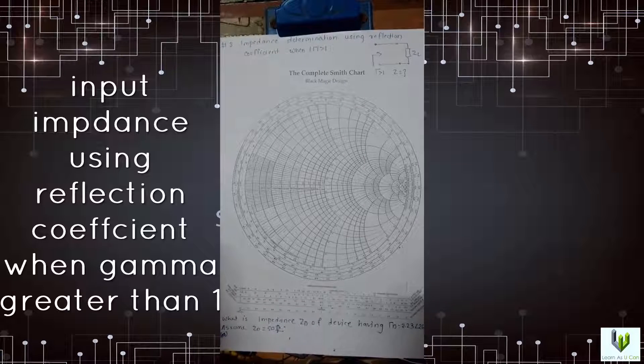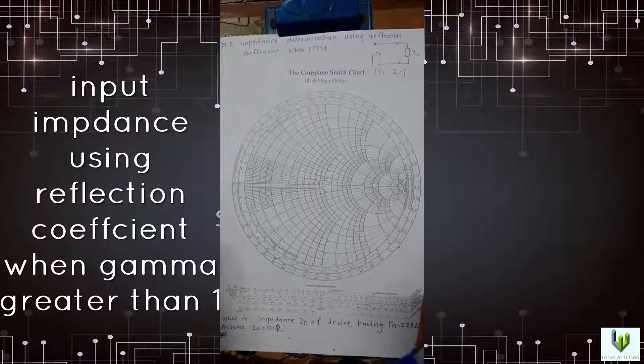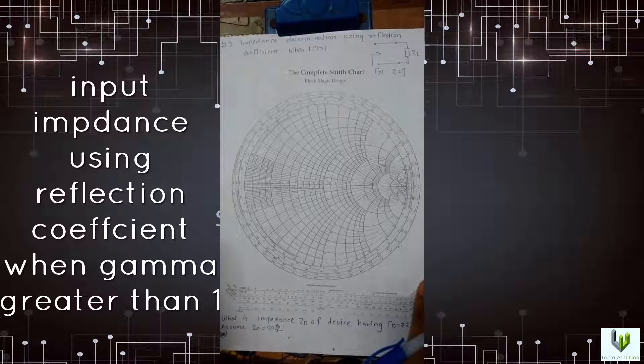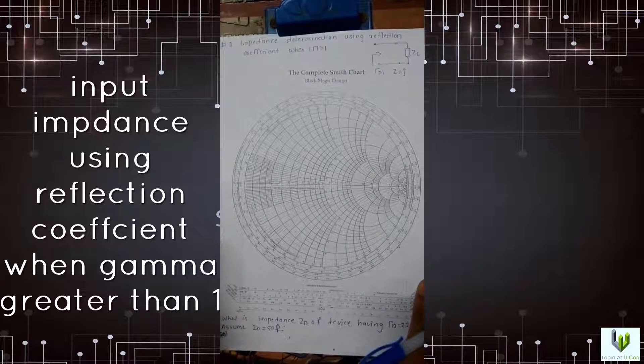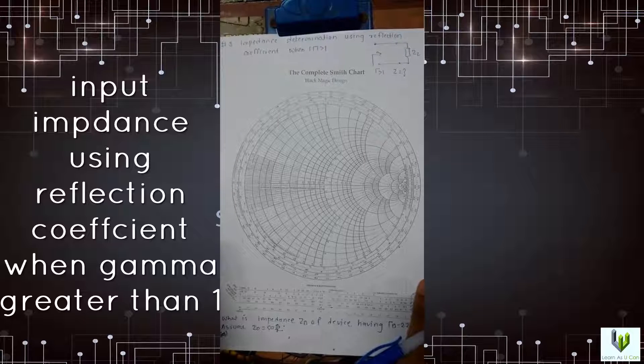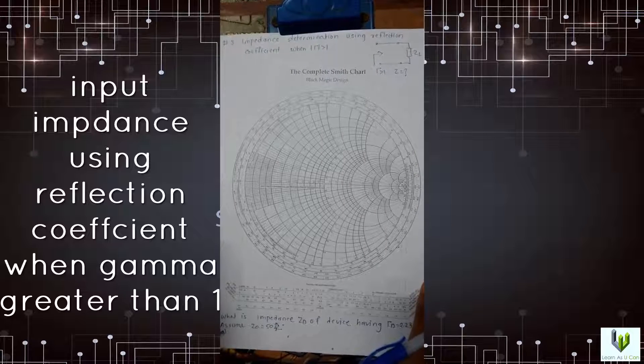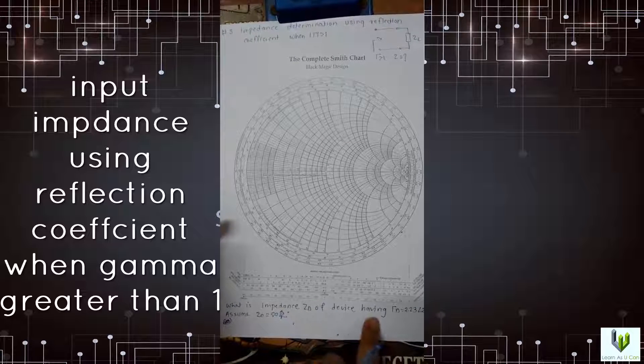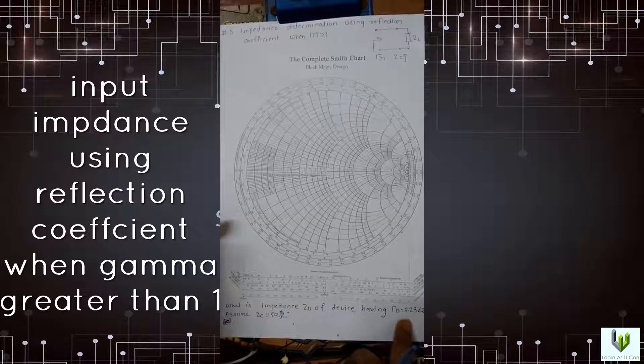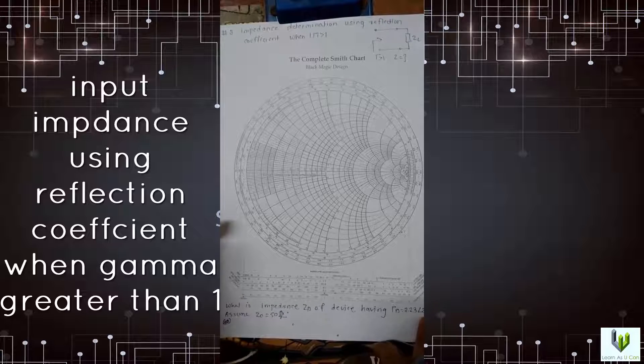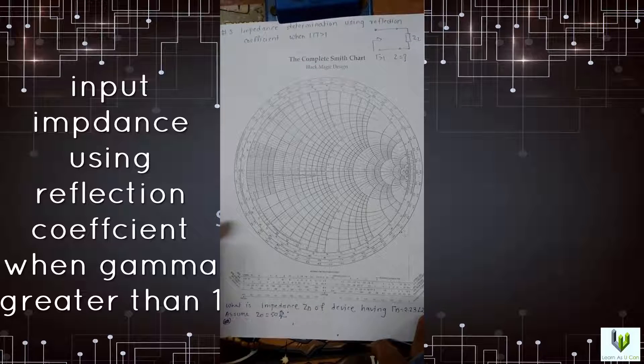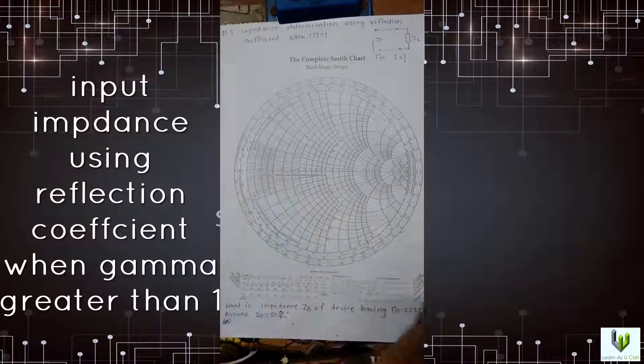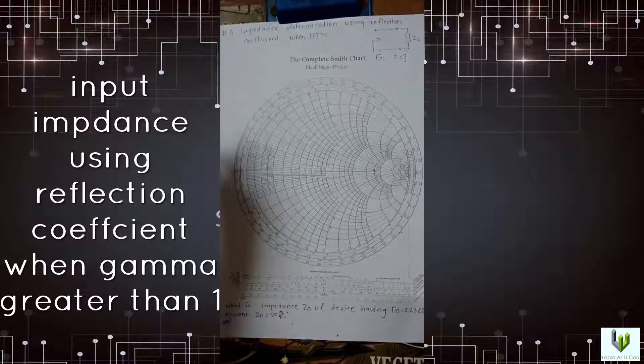Hi YouTube, welcome to Smith chart tutorial. Now I am going to show you how to find impedance determination using reflection coefficient when gamma is greater than 1. The question is: what is the impedance ZD of a device having gamma D equal to 2.23 angle 26.5? If you watch the gamma value, if you plot here it goes beyond this circle, maybe it exceeds this paper.